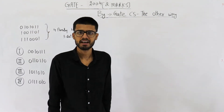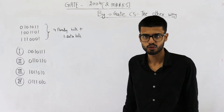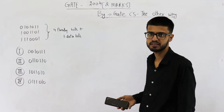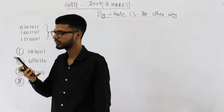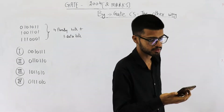Hello students, welcome back. This question is also from the GATE 2014 exam. It's for two marks. Just have a look at the statement. It says: consider a parity check code with three data bits and four parity check bits. Three of the code words are given. Which of the following are also code words? You can see they have given you four more code words, and you also have four options.